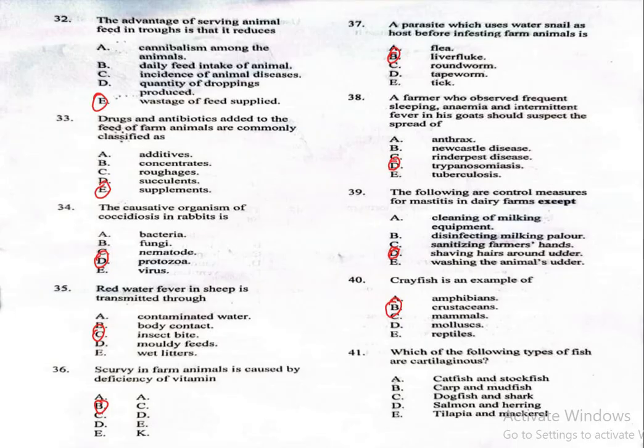Question 41: Which of the following types of fish are cartilaginous? A, catfish and stockfish; B, carp and mollfish; C, dogfish and shark; D, salmon and herring; E, tilapia and mackerel. The correct answer is dogfish and shark, which is option C.